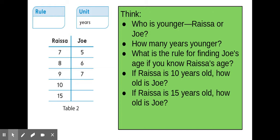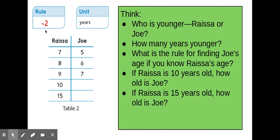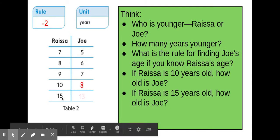If Raisa is ten years old, how old would Joe be? To figure this out, I could use the rule of take away two from Raisa's age. So ten minus two is eight — Joe would be eight years old when Raisa is ten. Fifteen minus two is thirteen, so if Raisa is fifteen, Joe will be thirteen years old.